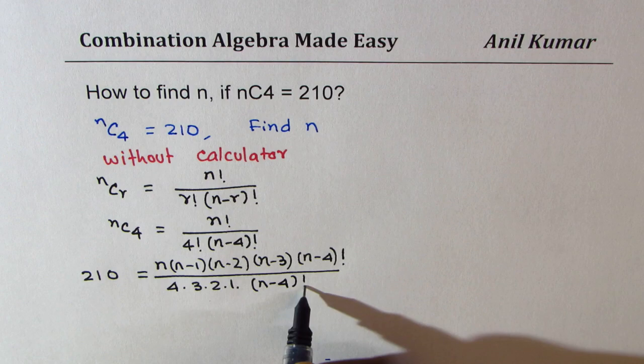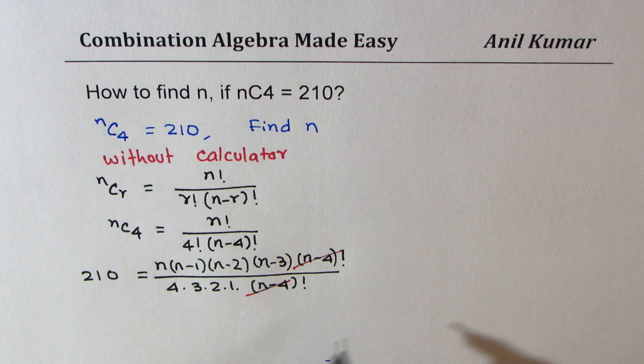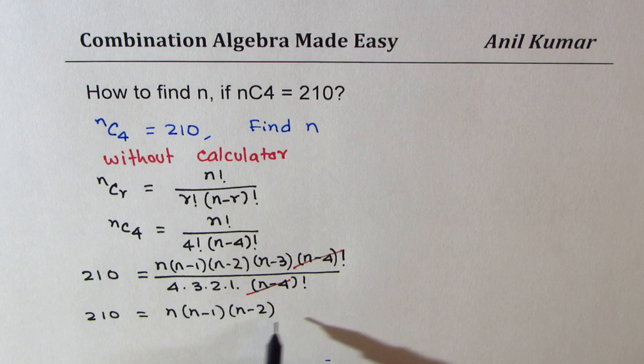Now we can cancel n minus 4 factorial. So we have a slightly simpler version: 210 equals n times n minus 1 times n minus 2 times n minus 3.